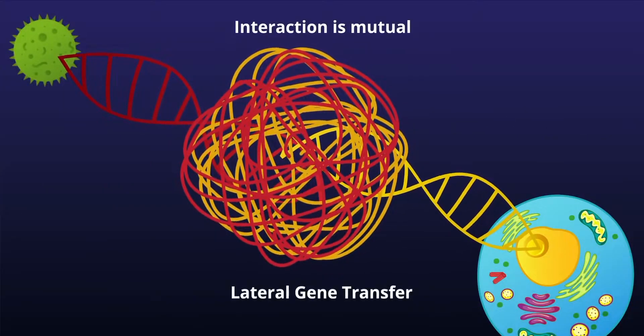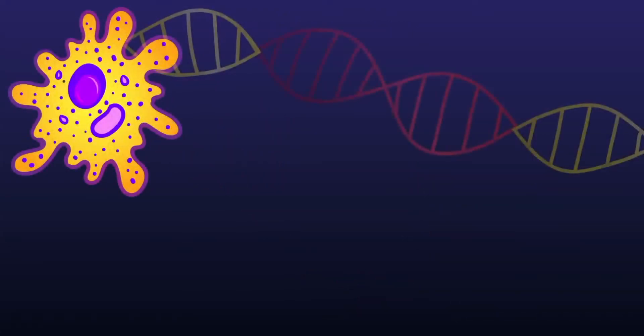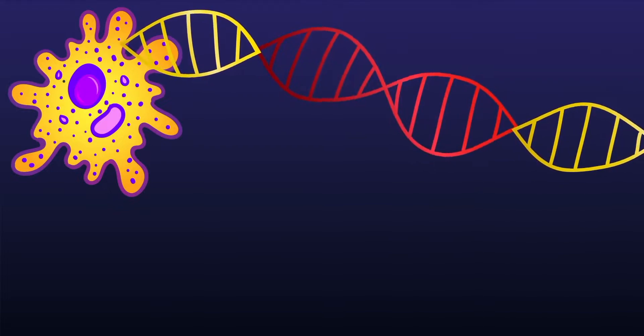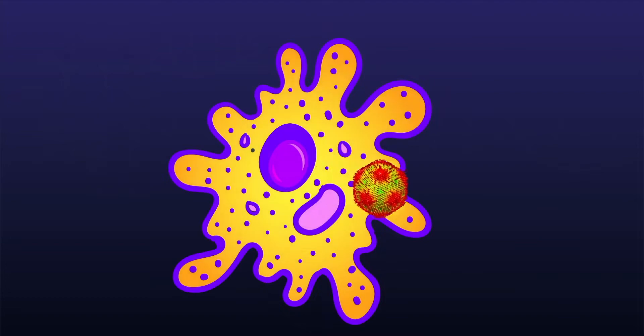This interaction is mutual and is called lateral gene transfer or LGT. Host and virus co-evolve. This is why the amoeba has in its genome proteins that encode for the virus's major capsid protein, even though it doesn't need one.